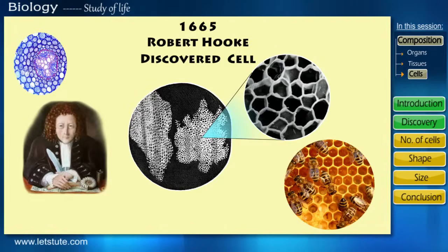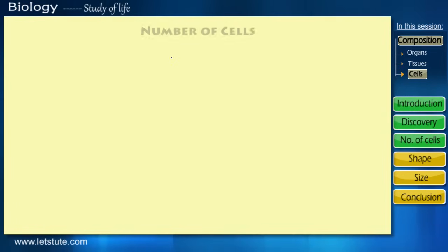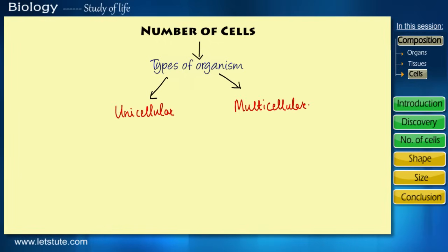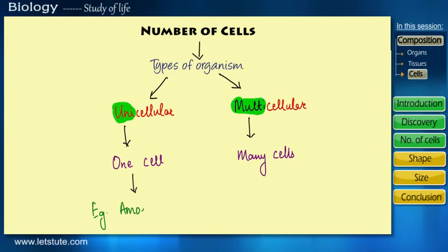So now we look at some of the features of a cell. Number of cells: based on the number of cells, an organism can either be unicellular or multicellular. As the word suggests, uni is one cell and multi means many cells. An example of a unicellular organism can be amoeba, and for a multicellular organism it's humans.